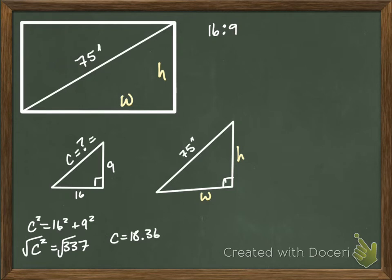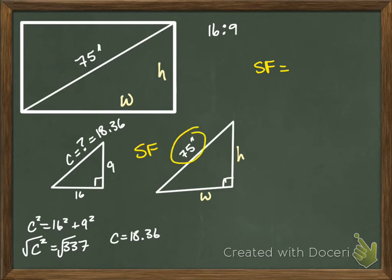So 18.36. My next step is I need the scale factor because I'm scaling up. So my scale factor — I'm using my similar sides. In this case my similar sides are 75 and 18 something, so these two. That's what I divide. I go 75 divided by 18.36. My scale factor is 4.08.